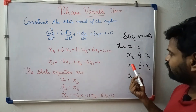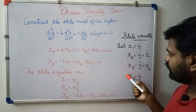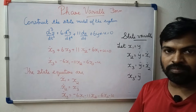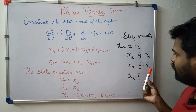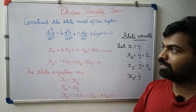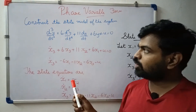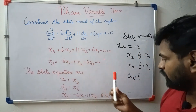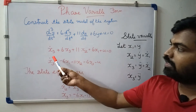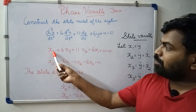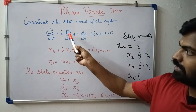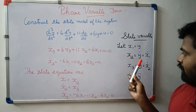x3 is defined. What is the derivative of x3? It is y triple dot. How do we substitute this equation? We have d³y/dt³ — y triple dot — and we substitute into x3 dot.